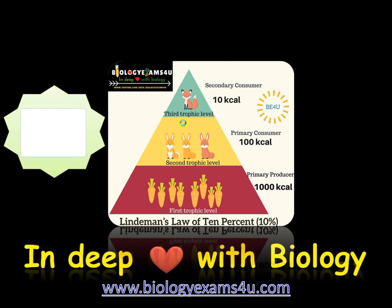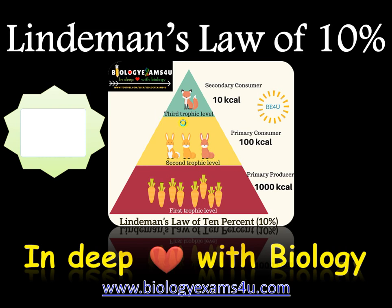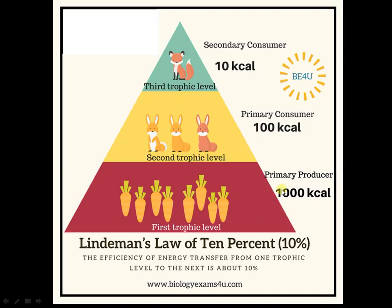Welcome to biologicsamswari.com. Today the topic of our discussion is Lindeman's law of 10%, or the rule of 10%. This is an ecological pyramid. The first trophic level is formed by primary producers or green plants, the second trophic level is formed by herbivores, and the third trophic level is formed by carnivores.